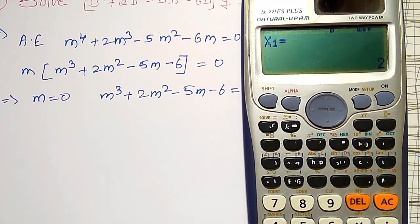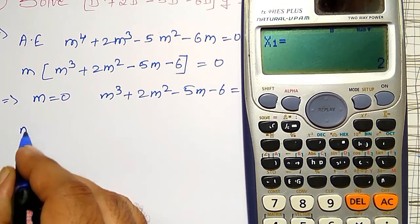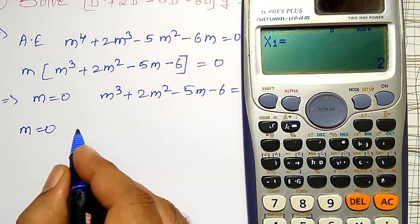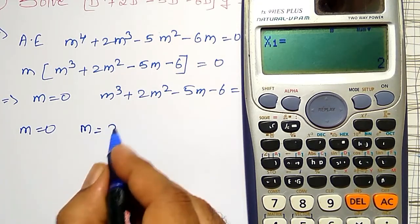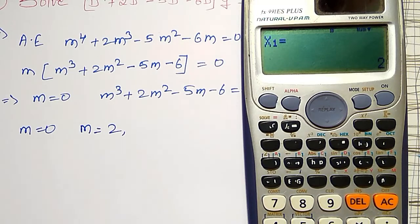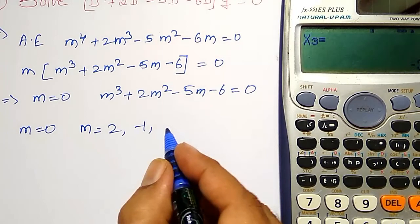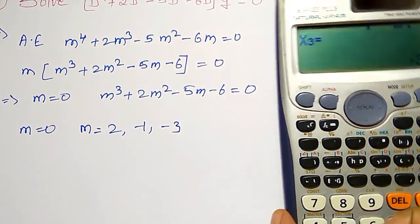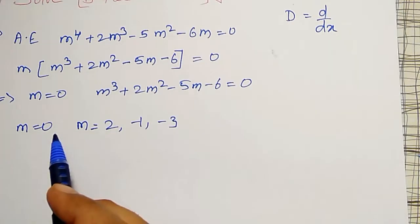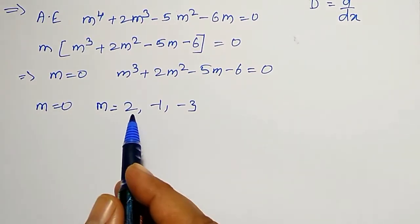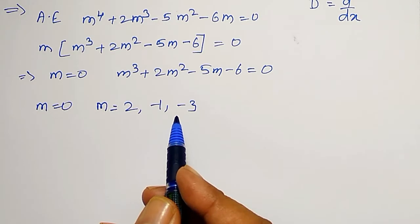x1 means, 2 I am getting. First root is m equal to 0. Then next, m equal to 2. Next, second root is minus 1. And next, one more root is minus 3. Therefore, total 4 roots we should get. These are the 4 roots: m equal to 0, 2, minus 1, minus 3.